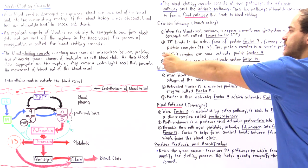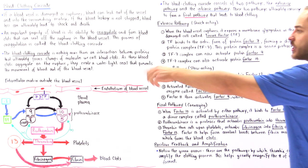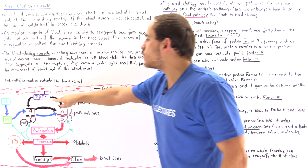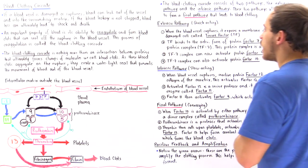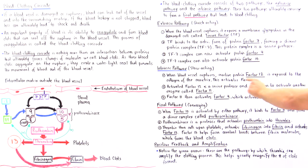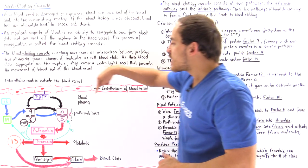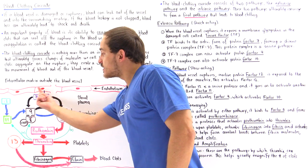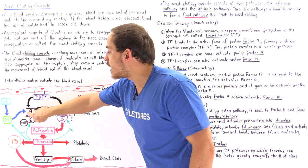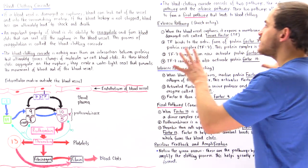The extrinsic pathway is a quick-acting pathway that reacts rapidly to rupturing within the endothelial cell. When the blood vessel ruptures, it exposes the tissue factor on the damaged cell. TF binds to the active form of factor seven to form the dimer complex TF-7, which is a serine protease. This activates factor ten and factor nine, and activated factor nine then activates more factor ten.